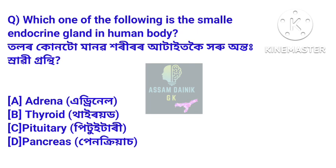Which one of the following is the smallest endocrine gland in the human body? Tollar kuntum manov hori or ataitkoe horu onta shrabi grunti.